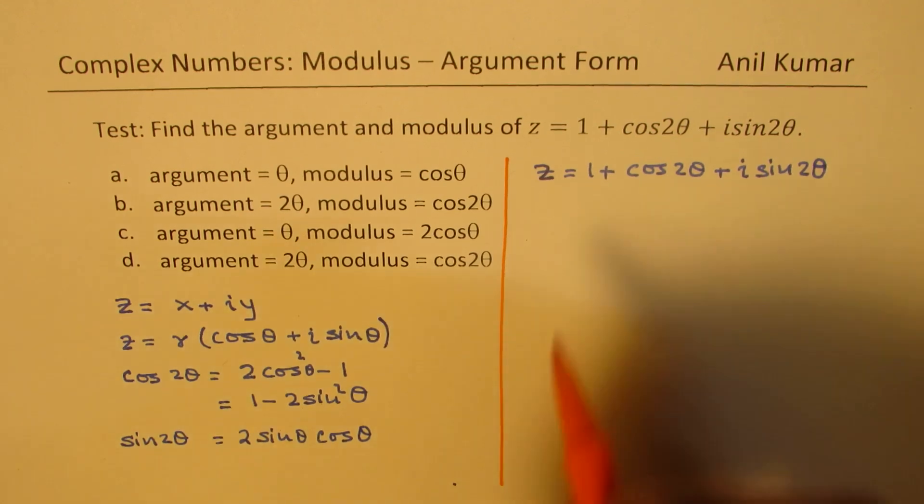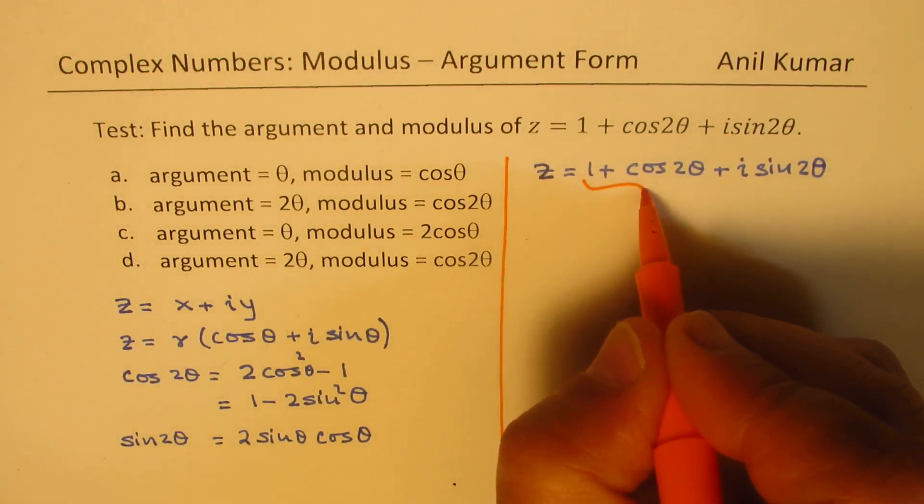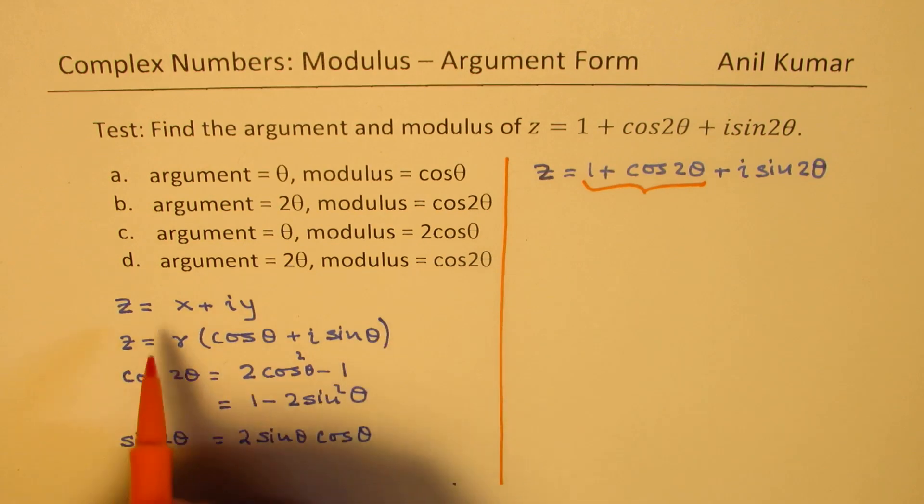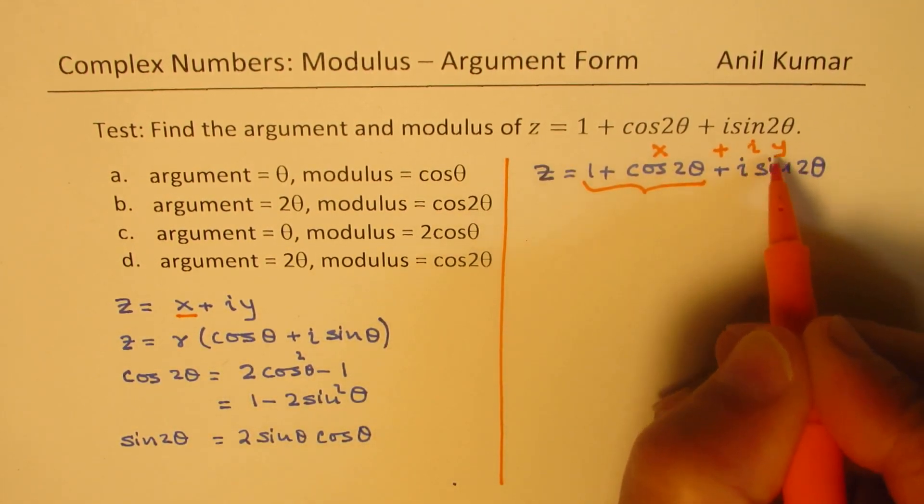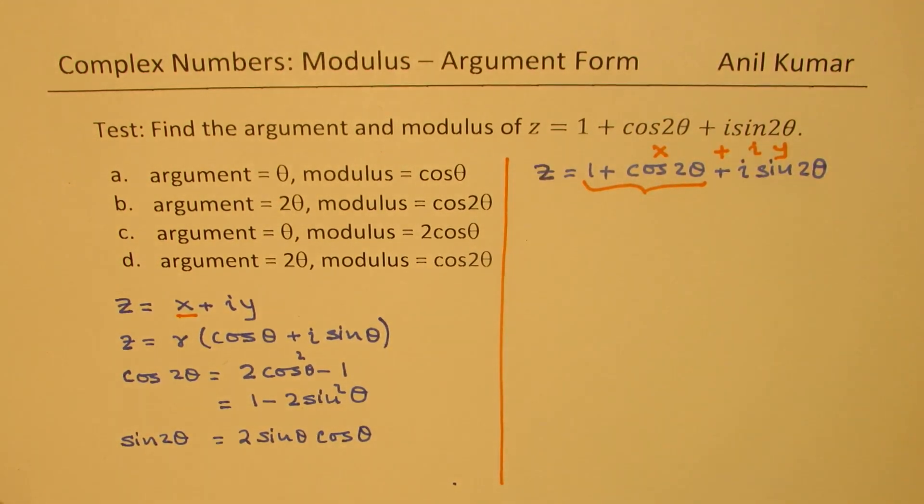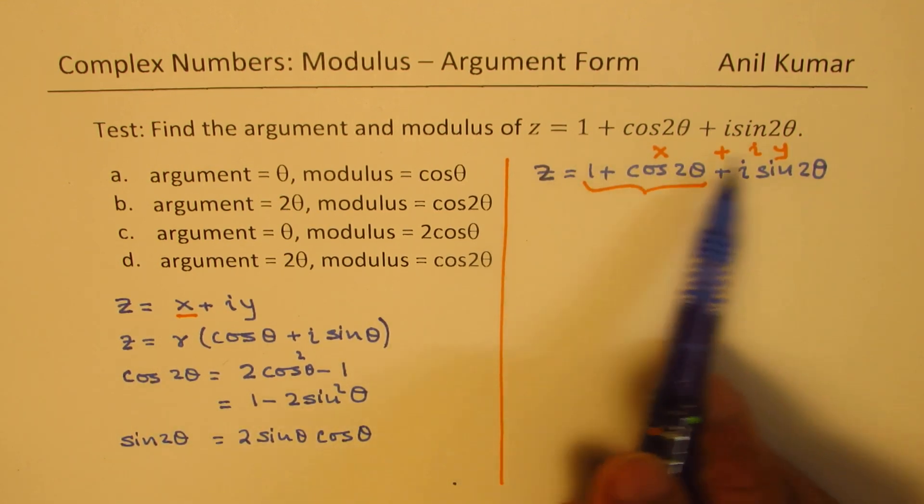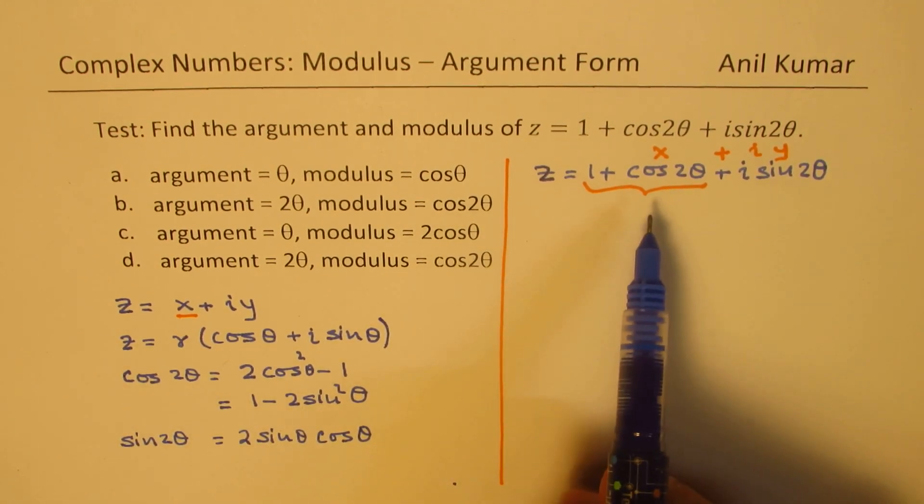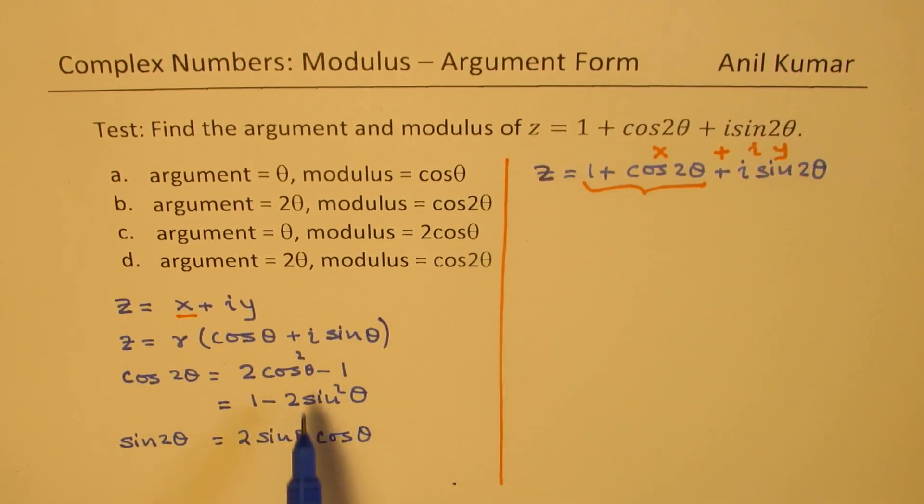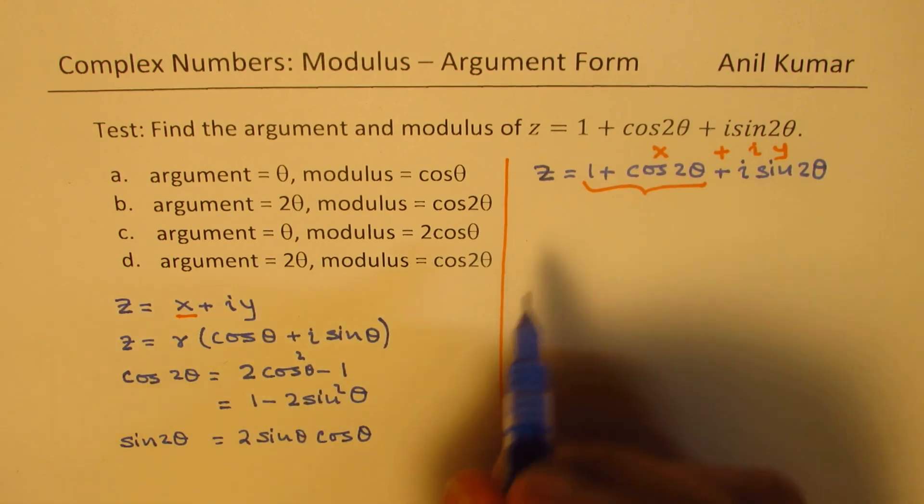Here 1 plus cos 2 theta will be treated as x, right? This is i y. So that is the y portion, the imaginary part. When you want to find the argument, in that case, you need to somehow write it in this form, only then you could do it. What I would like you to do is to rewrite this using the trigonometric identity.